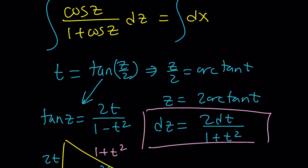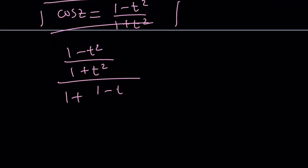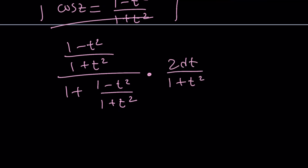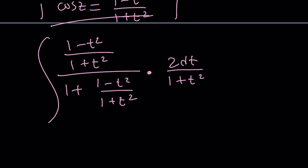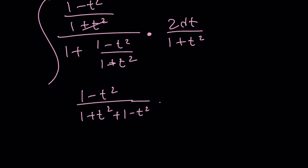Let's plug everything in. Cosine z is 1 minus t squared over 1 plus t squared, divided by 1 plus cosine z — that's 1 plus 1 minus t squared over 1 plus t squared — multiplied by dz, which is 2 dt over 1 plus t squared. The 1 plus t squared terms appear a lot, but after making a common denominator the denominator at the bottom becomes 1 plus t squared plus 1 minus t squared, multiplied by 2 over 1 plus t squared, times dt.